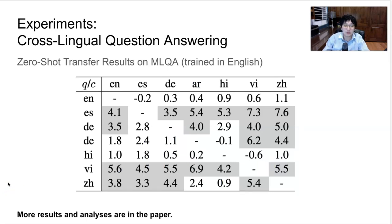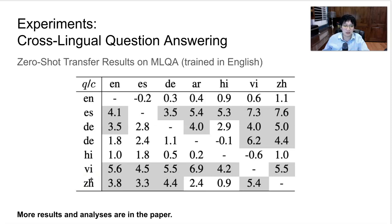Finally, we consider a more general cross-lingual transfer setting where the question and the context passage are in different languages. For example, a cell in this table shows the result where the question is in Spanish and the context passage is in Arabic. The numbers in this table show the performance difference between multilingual BERT with syntax information and the baseline multilingual BERT. As you can see, when the question and context passage are in different languages, the proposed model often outperforms the multilingual BERT model significantly. We have more results and analysis in the paper, and due to time constraints I will skip those here — please visit our poster or read the paper for more details.